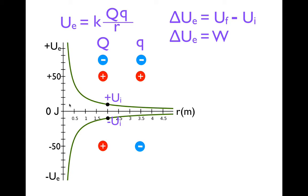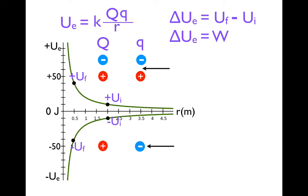Now we're going to bring these charges closer together. If we bring them to half a meter apart, the potential energy for the like charges gets more positive — their new potential energy is 40 joules. Let's do the same for the opposite charges: bring them to half a meter apart, and now their new potential energy is negative 40 joules.